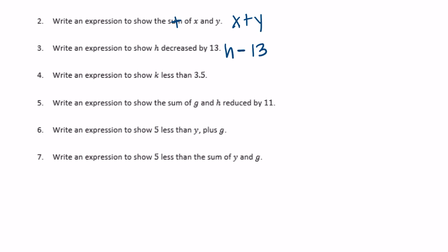Write an expression to show k less than 3 and 5 tenths. So we want k less than 3 and 5 tenths. This time we're going to start with 3 and 5 tenths and we want k less than that, so let's subtract k.